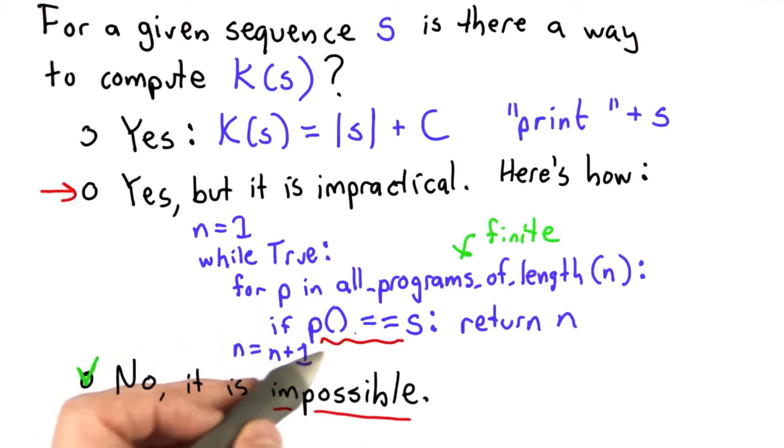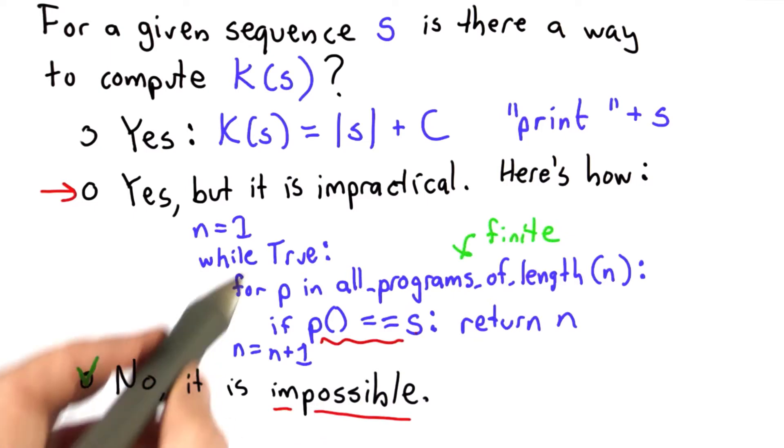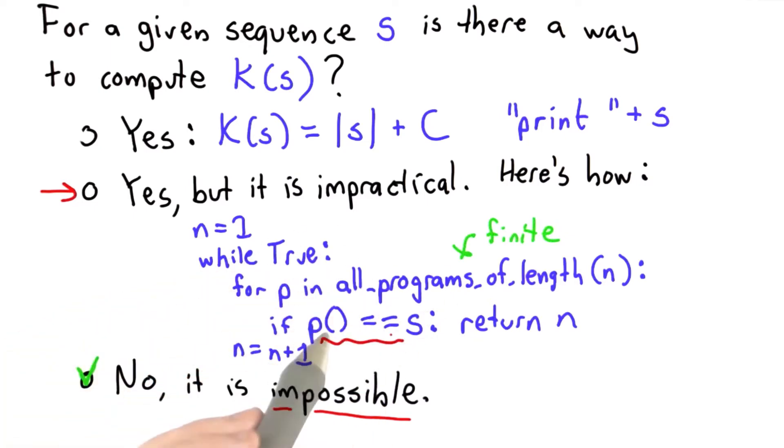We would need to know that p will either never finish or know how long to wait to keep running p. So we can't actually do this step. This might run forever. This loop may never finish, and so we would never learn the result. So that's why this doesn't work.